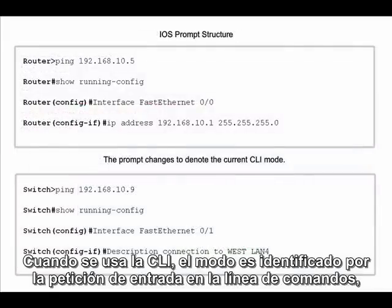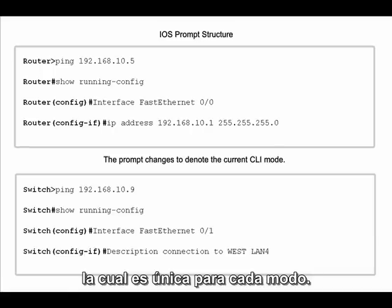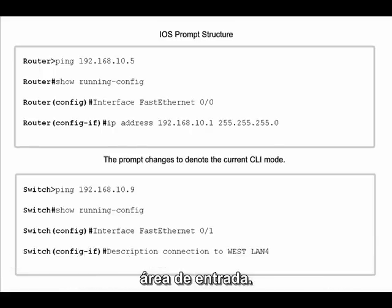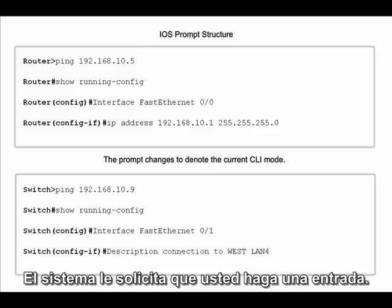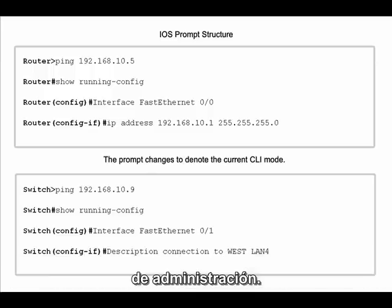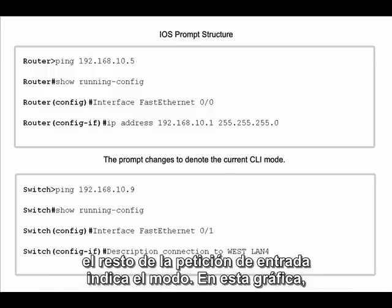When using the CLI, the mode you're in is identified by the command line prompt, which is unique to that mode. The prompt is composed of the words and symbols on the line to the left of the entry area, where the system is prompting you to make an entry. By default, every prompt begins with the device name, which you can change for ease of administration. Following the name, the remainder of the prompt indicates the mode.